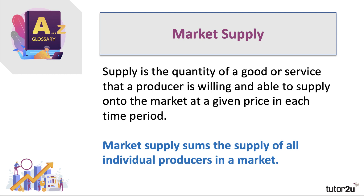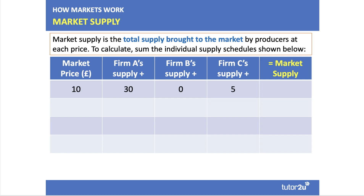Here's a quick numerical example. Market supply is the total supply brought to the market by producers at each price. For example, if the market price is £10, Firm A is willing to supply 30 and Firm C 5, but Firm B — perhaps with higher costs — can't supply any, so market supply is 35. When price rises to £20, Firm A expands to 45, Firm B enters the market with 10, and Firm C expands to 15, giving a total market supply of 70.